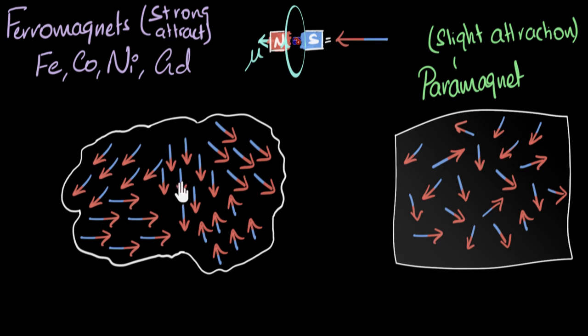But the specialty of ferromagnets is you can see these groups, and let me help you see that. You can see groups of atoms, and there can be billions of them, that are all aligned in the same direction. That is the specialty of ferromagnets.